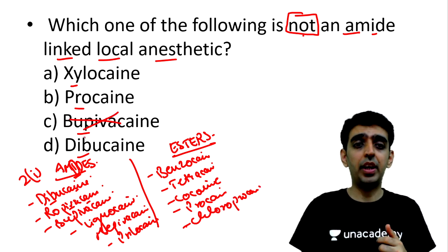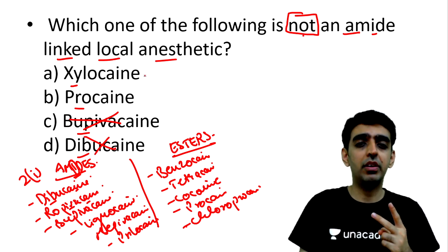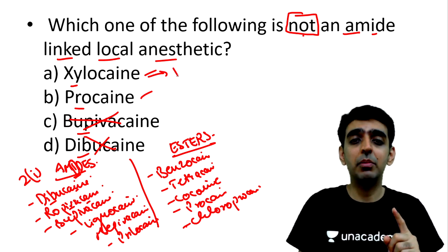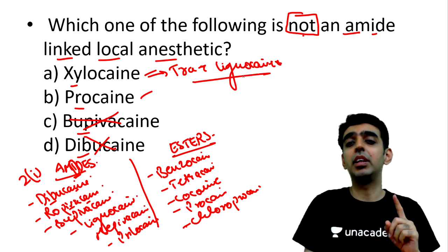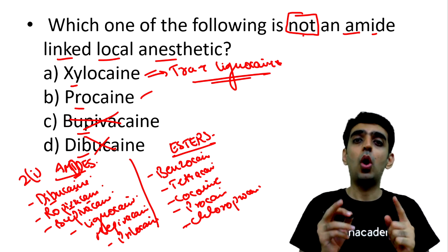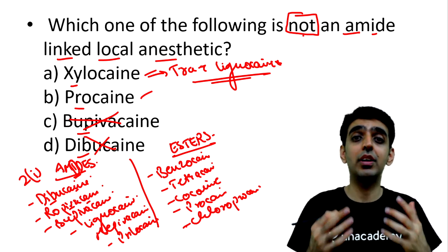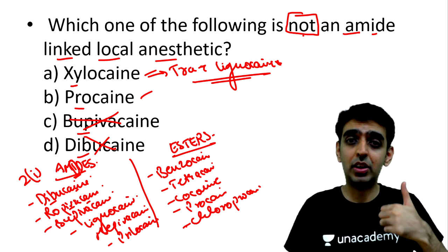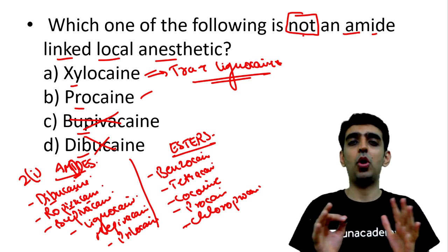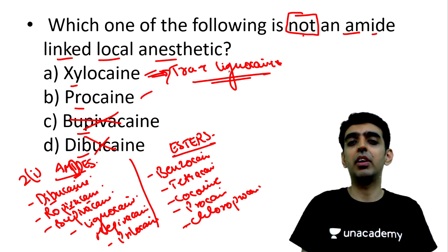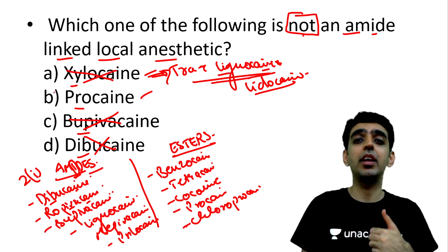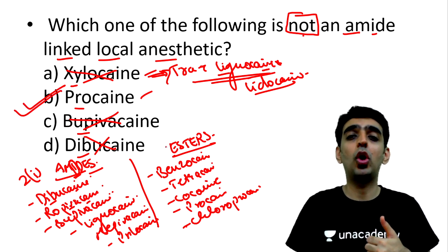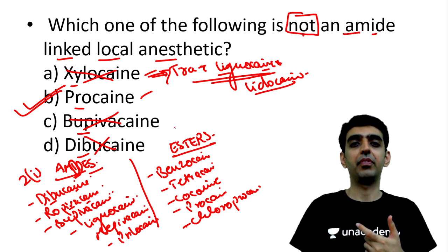Bupivacaine and dibucaine are ruled out since they are amides. Among the remaining options, xylocaine is the trade name for lignocaine — also known as lidocaine — which has two i's and is therefore an amide. So the correct answer is procaine, which is an ester-linked local anesthetic. Note that this topic has been asked previously in examinations and can be repeated.